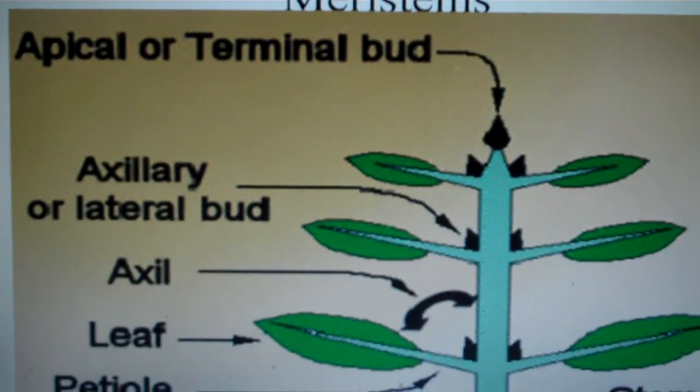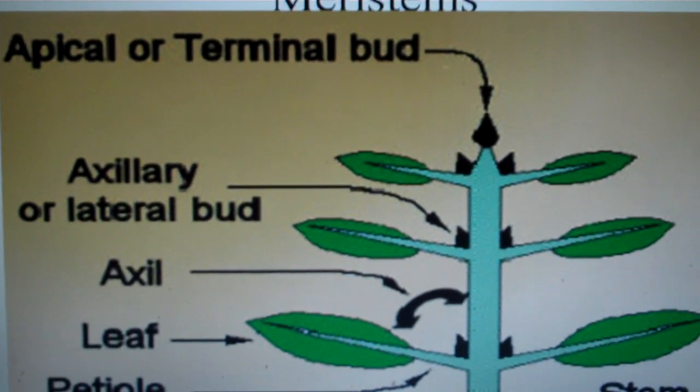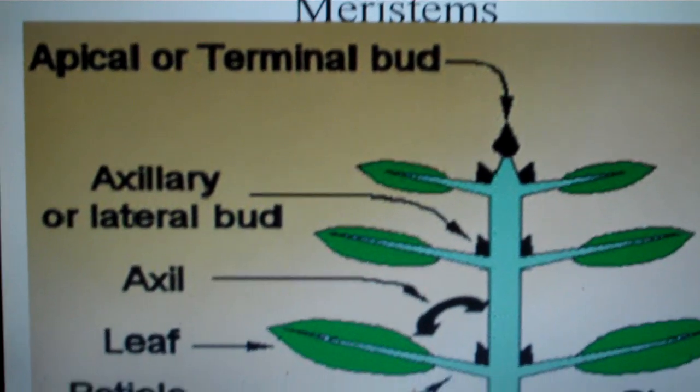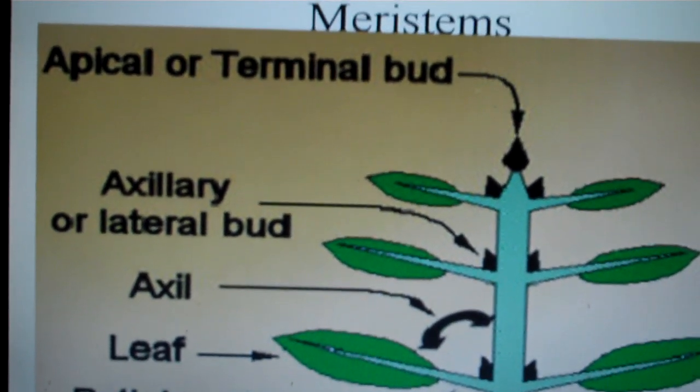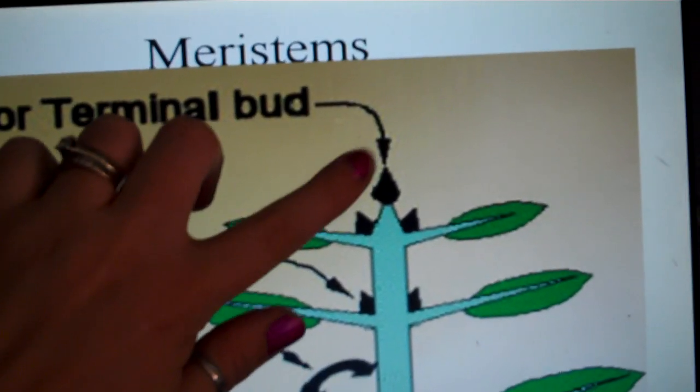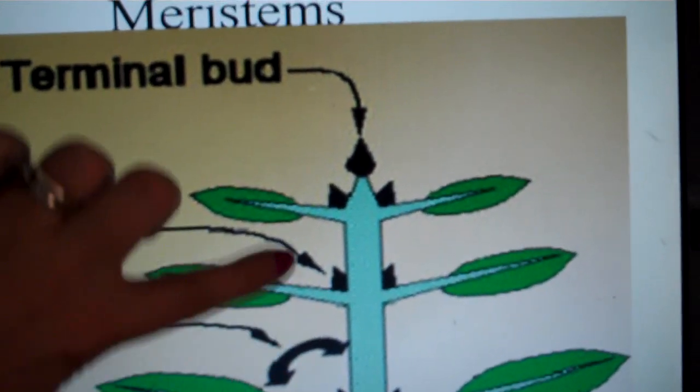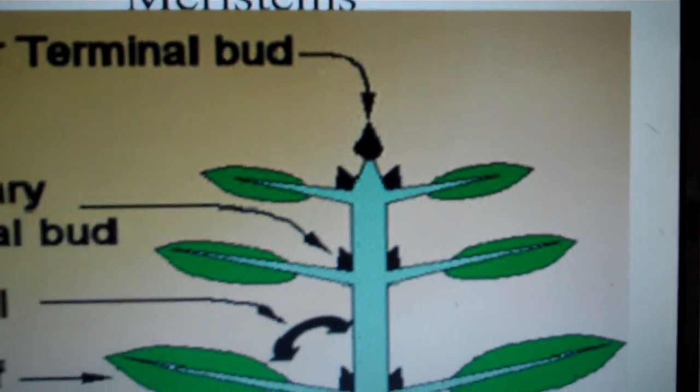Most of the primary growth occurs at the tip of the plant, at the apical or terminal bud, also called the apical meristem or terminal meristem, which is located here. This is responsible for the plant's primary growth, which is growth in size or height.